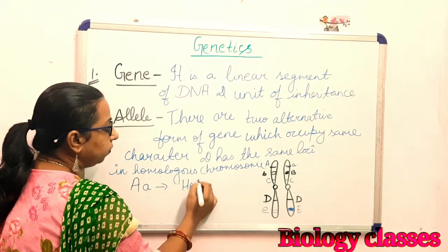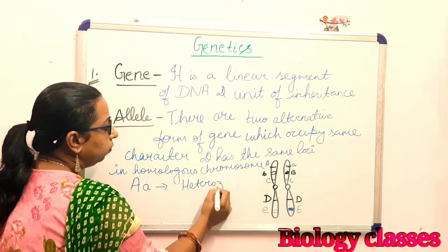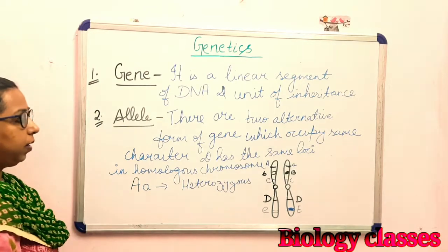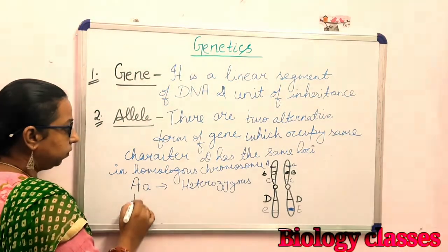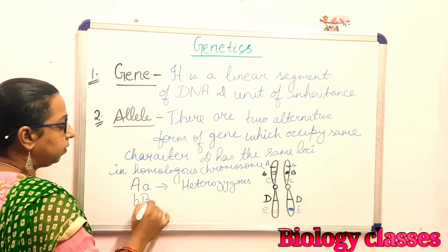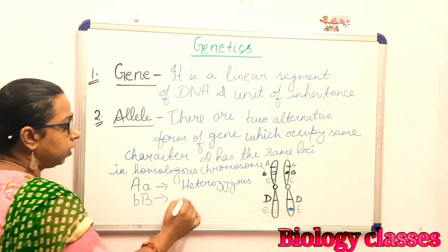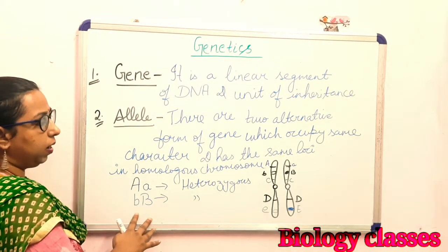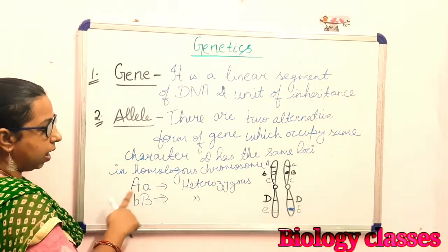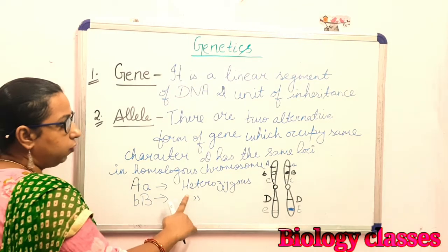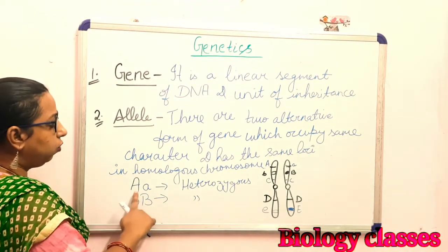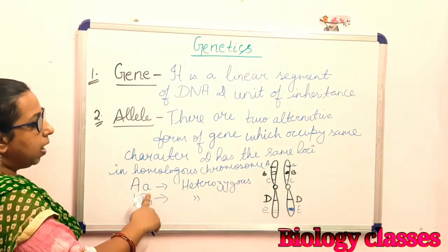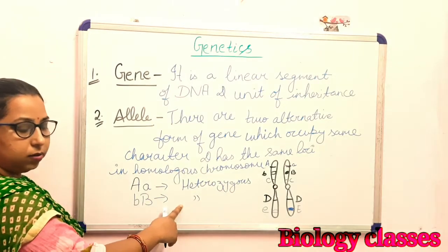Capital A and small a will be called heterozygous. Similarly, small b and capital B will also be called heterozygous because there are two alleles — one is dominant and one is recessive. Hetero means two, so there are two contrasting forms of the character, and they are called heterozygous.